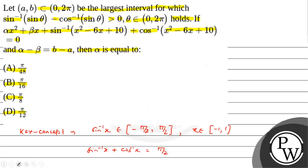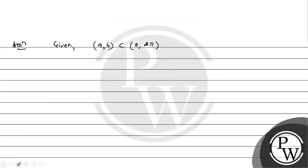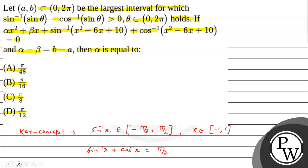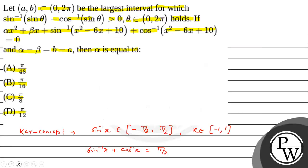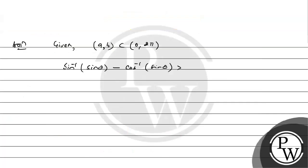First of all, sin⁻¹(sin θ) - cos⁻¹(sin θ) which is greater than 0 and θ belongs to (0, 2π).